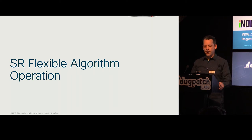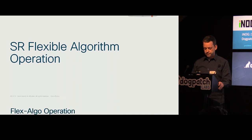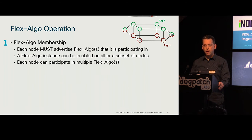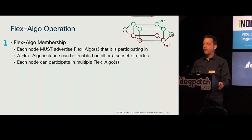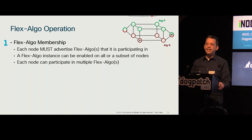Now we're going through the technical operation — how does it work? The first thing we have to do is declare membership: which routers belong to which Flex Algo instance. Looking at the picture, the color of the line implies a Flex Algo instance — green routers and red routers. We'll call those Algorithm K and Algorithm P.